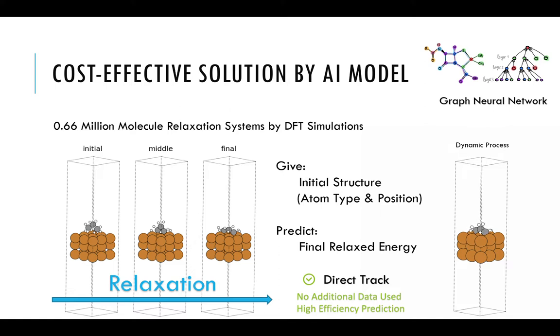For this purpose, Open Catalyst Challenge provides 0.66 million molecular relaxation systems by DFT simulations to develop a good AI method to better model the catalyst. The system contains a catalyst and an adsorbate. The different 3D structure of adsorbate maps to different energy, and the structure is changing towards lower energy structure. This changing process is called relaxation.